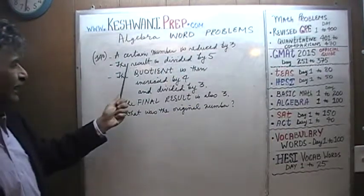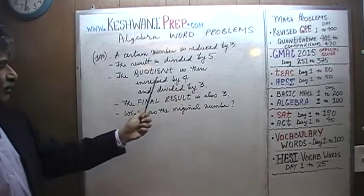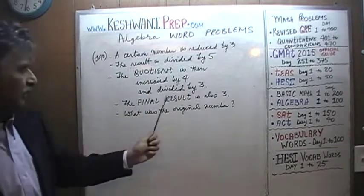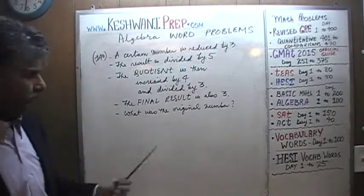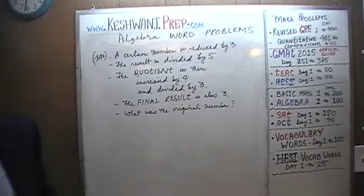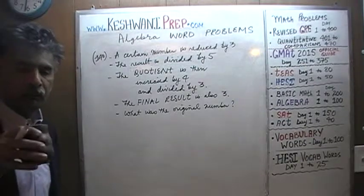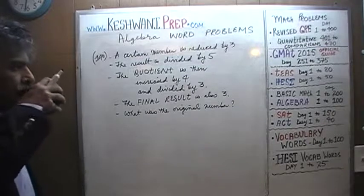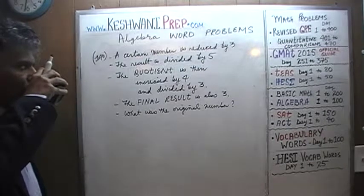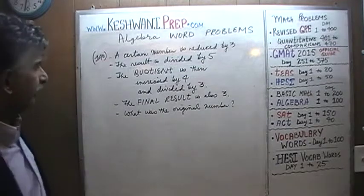One more time. A certain number is reduced by 3. The result is divided by 5. The quotient is then increased by 4 and divided by 3. The final result is also 3. What was the original number? I'll give you 5 seconds to pause the video.